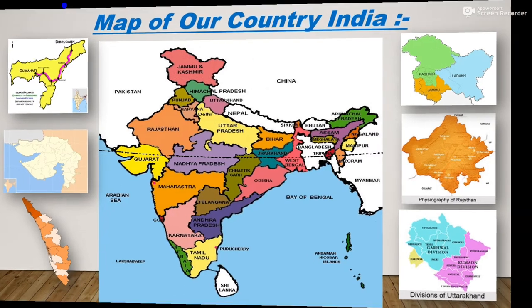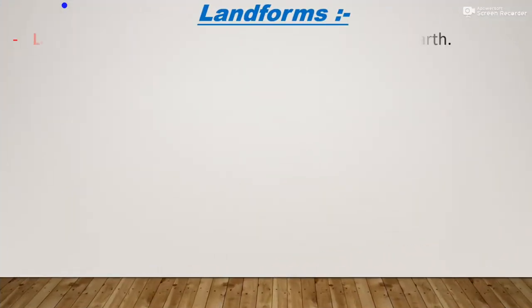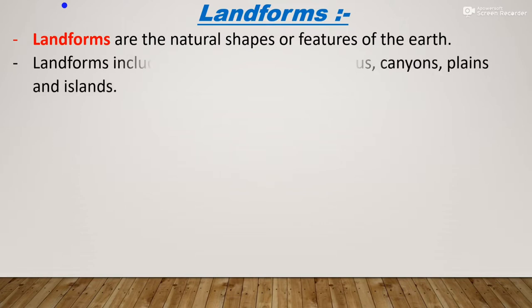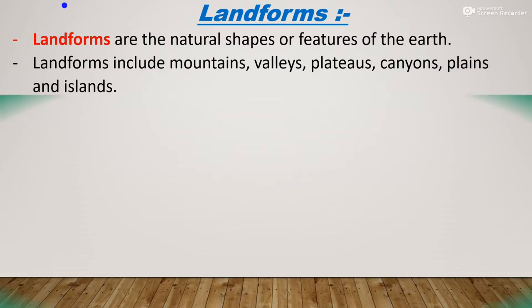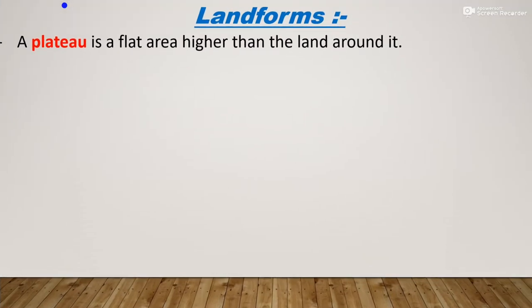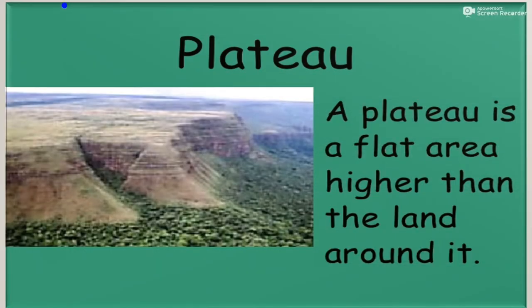Now we will discuss landforms. Landforms are the natural shapes or features of the earth. Landforms include mountains, valleys, plateaus, canyons, plains, and islands. The first one is plain. A plain is a flat area on the earth's surface. You can see in the picture — it is a flat area.